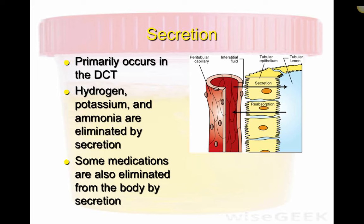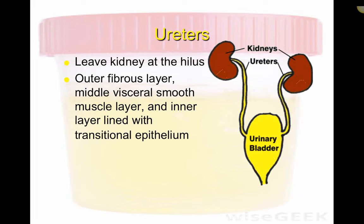Secretion occurs mostly in the distal convoluted tubule. It's important to know that some medications are eliminated from the body by secretion through the kidneys, and overdoses of certain medications can cause serious kidney destruction. A good example is Metacam — the brand name for Meloxicam — especially in cats: if that medication is overdosed, the kidneys can't handle it and it can cause permanent kidney malfunction and damage.